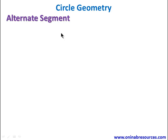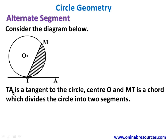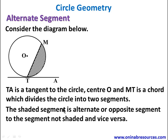We'll consider the diagram below. TA is a tangent to the circle with center O, and MT is a chord which divides the circle into two segments: the shaded segment and the segment not shaded. The shaded segment is the alternate or opposite segment to the unshaded segment, and vice versa — they are alternate segments to each other.